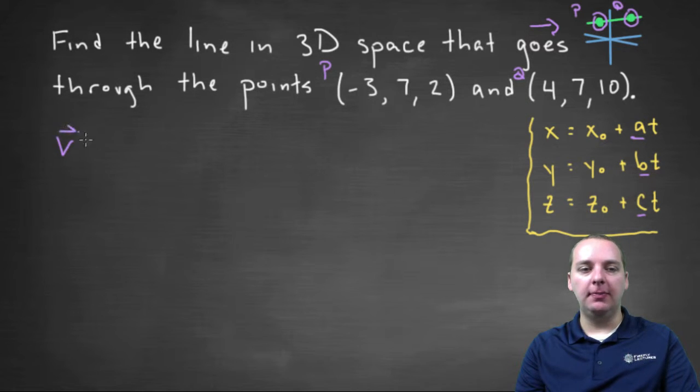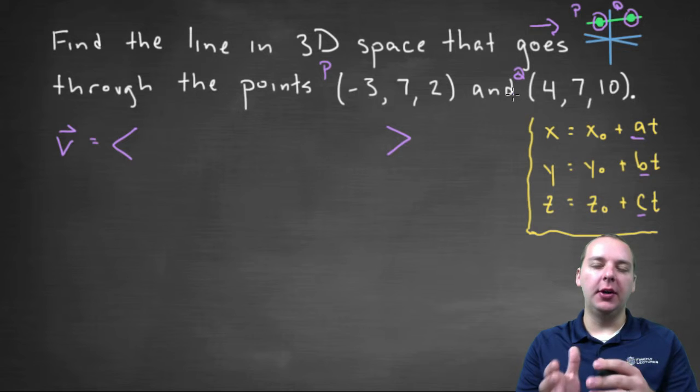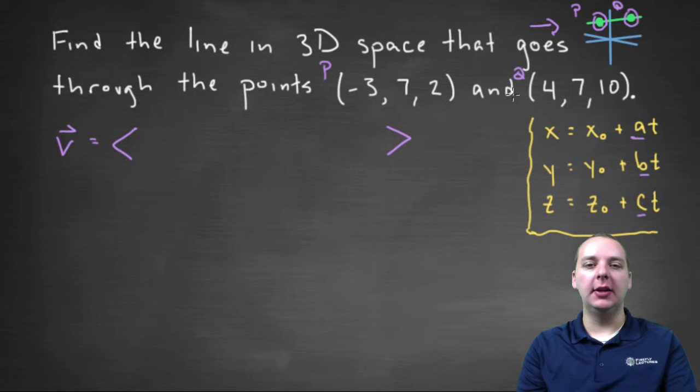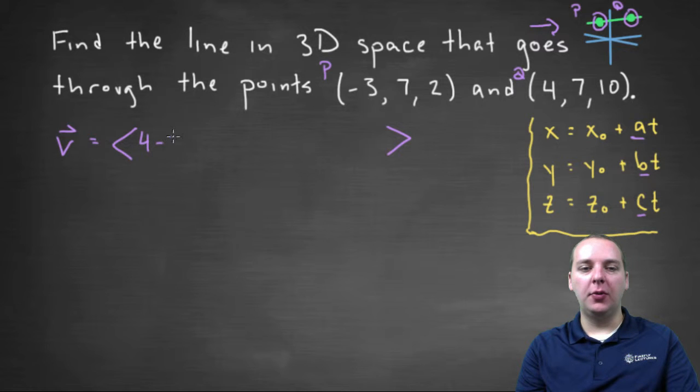So we'll call that vector V. And we're pretty comfortable taking line segments and converting them into component form. We studied that before. We'll do terminal minus initial. So we'll have four minus negative three. We'll do seven minus seven for the jth component, and ten minus two for the kth component.